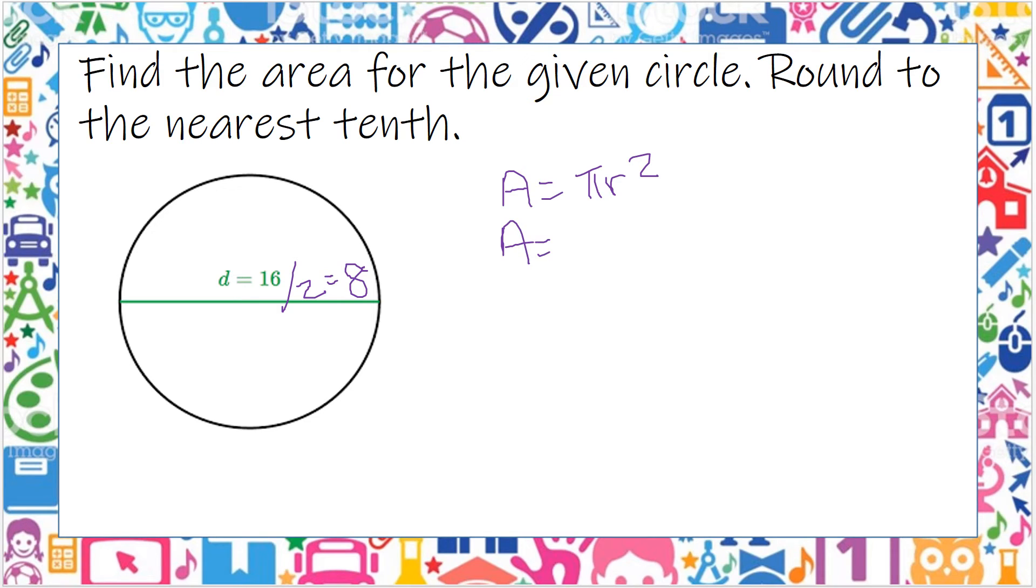So now I could plug it in. 3.14 times our radius, which is 8, times 8, or 8 squared. So now I'm going to plug that into my calculator, 3.14 times 8 times 8, and I do get that the area is 200.96 hundredths. And we don't have a unit, so I'm going to just put units squared.